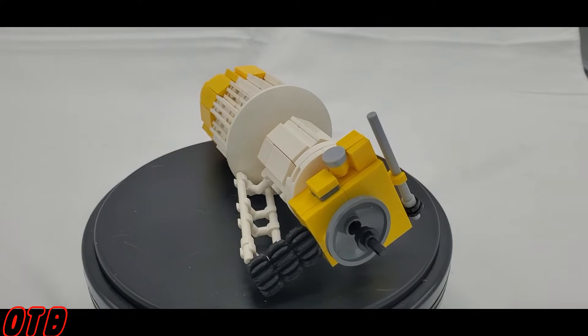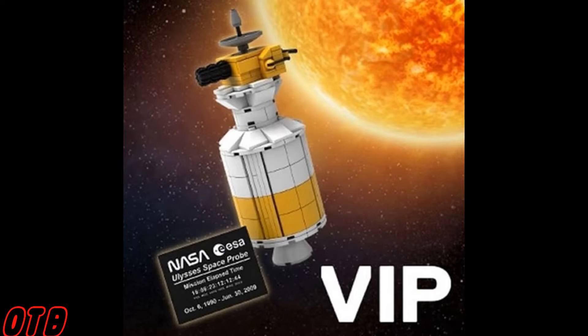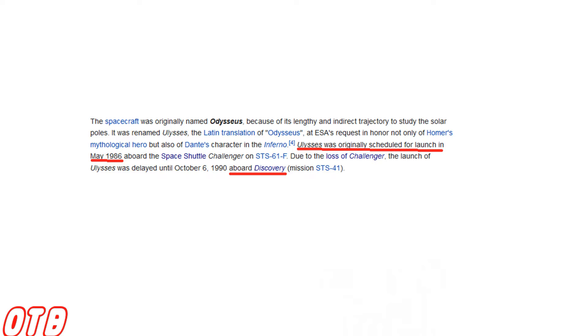Now why LEGO chose this space probe to be the promotion is actually quite simple, sort of. Originally, Ulysses was supposed to launch in May of 1986 aboard the Space Shuttle Challenger. However, in January of 1986, we saw the unfortunate loss of the Challenger and her crew, so the Ulysses space probe ended up being launched on the Discovery shuttle in 1990.